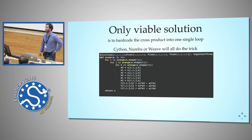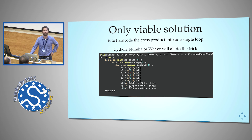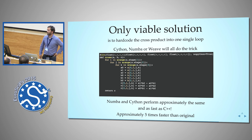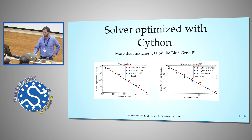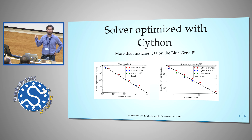The only viable solution I found was to hard-code this loop into Cython, Numba, or Weave — they all do the trick. Cython and Numba are equally fast and reach the same speed as C++. Weave is a bit slower; I didn't investigate too deeply. But this is five times faster than the original pure-NumPy version, so now it's as fast as C++. The solver optimized with Cython is now exactly as good as the pure C++ solver — it's still a Python solver, just with a few routines moved to Cython.